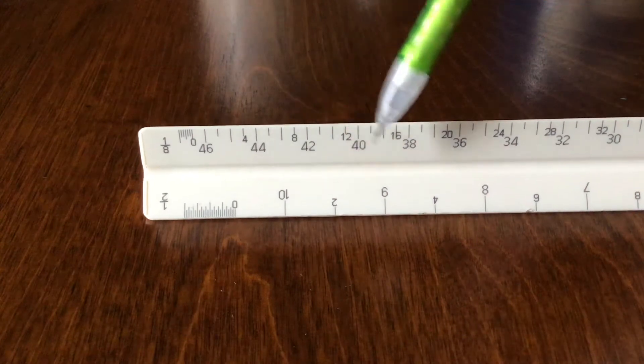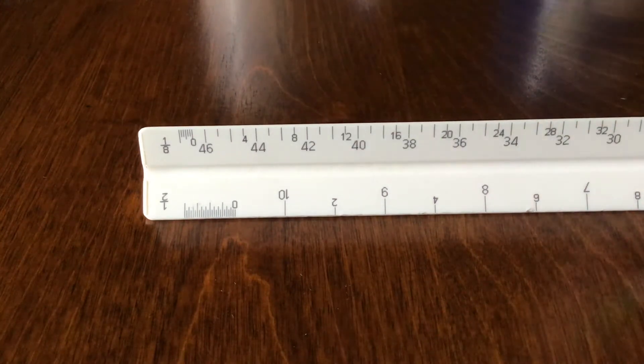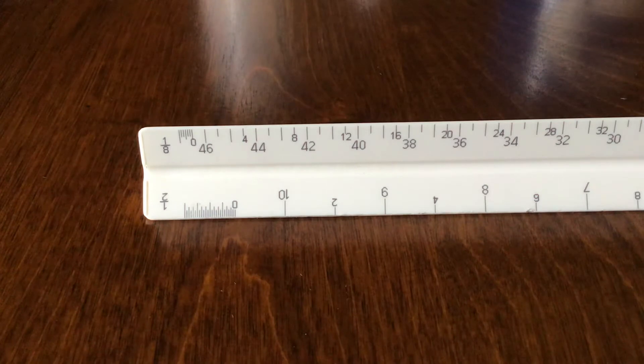You'll notice that there's a 10, a 9, an 8, a 7, 6, those numbers are going down they actually are with the scale that's going the other direction on the ruler.